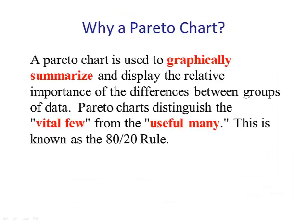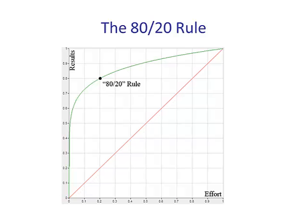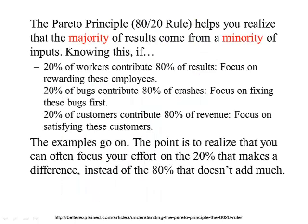Why do we need to look at a Pareto chart? Well, a Pareto chart is used to graphically summarize and display relative importance of differences between groups of data. A Pareto chart distinguishes the vital few from the useful many. This is also known as the 80-20 rule. 20% here makes up 80% here. That's the 80-20 rule.